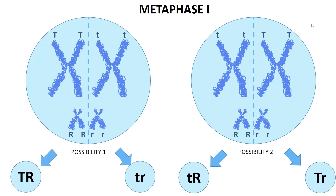The four gamete types are: the one carrying big T and big R, small t and small r, small t and big R, and big T and small r.